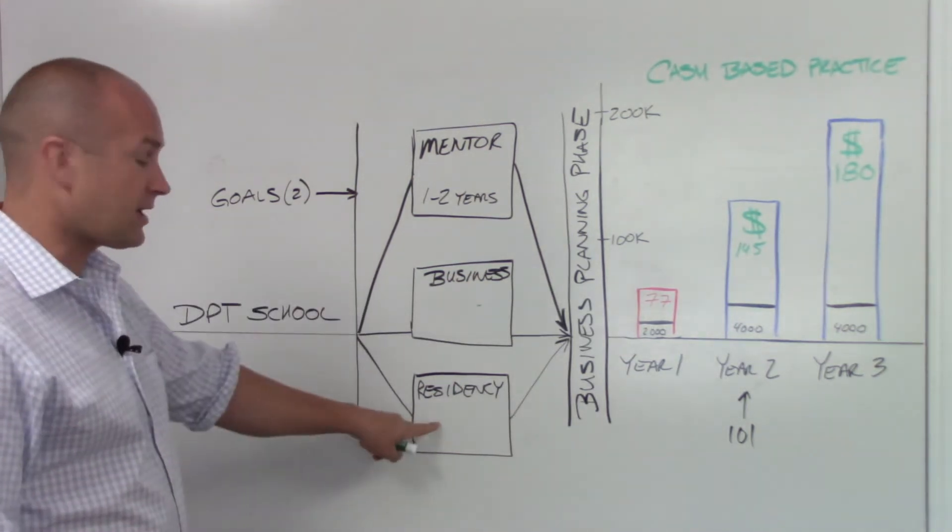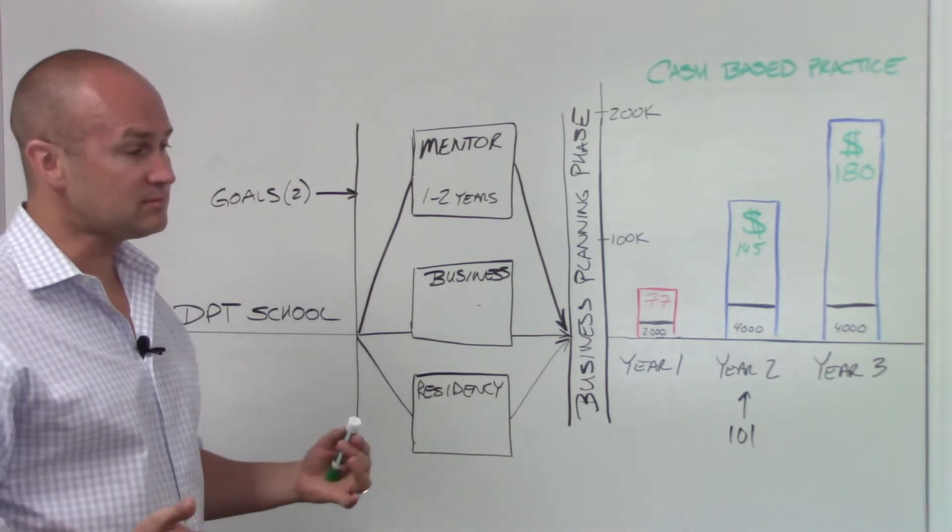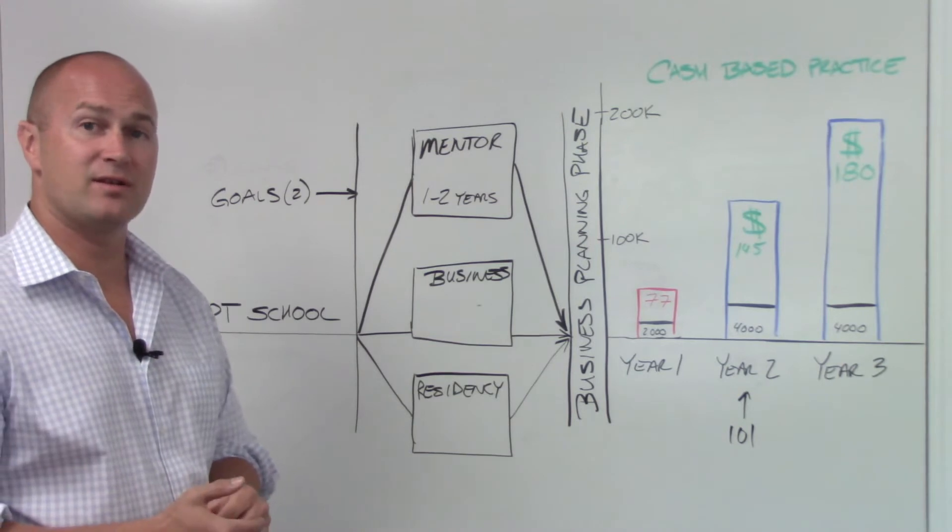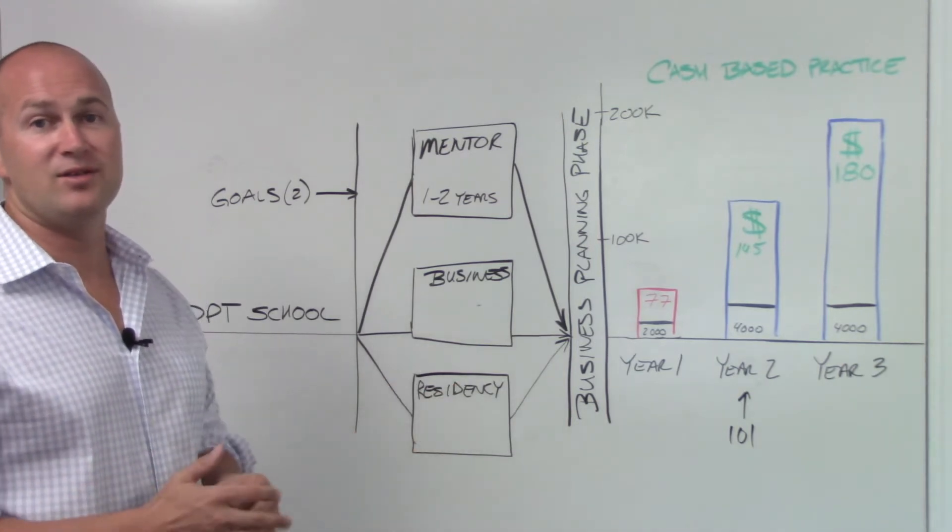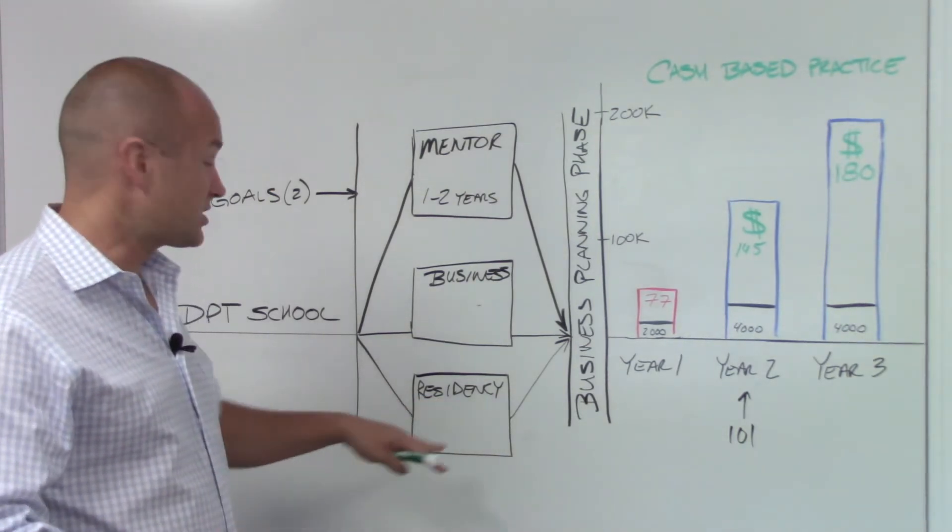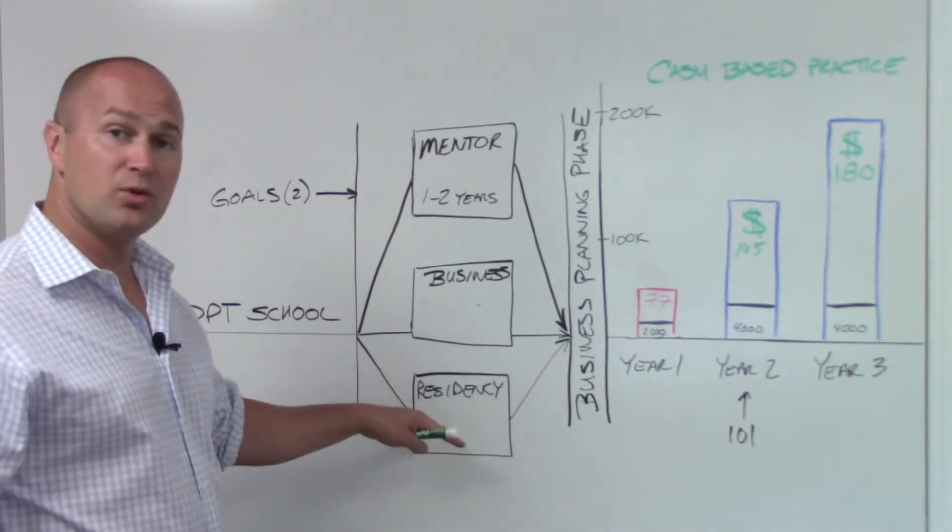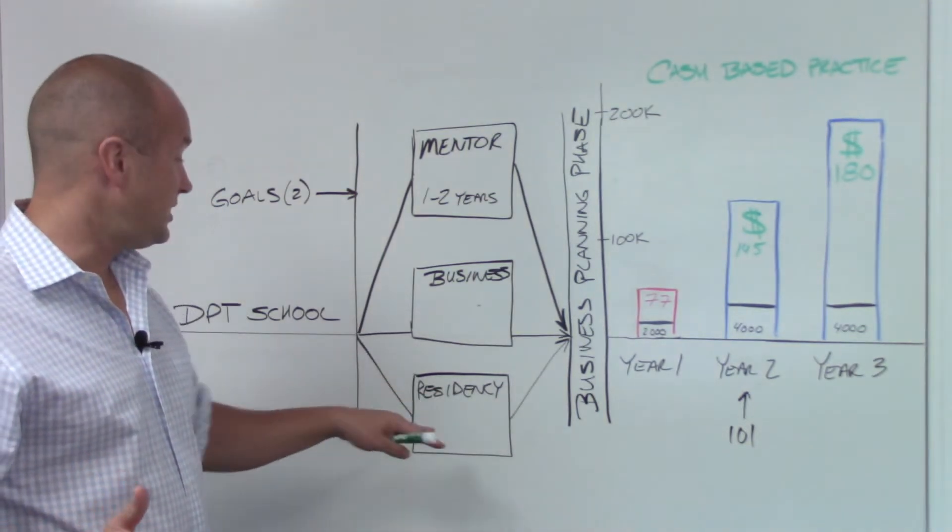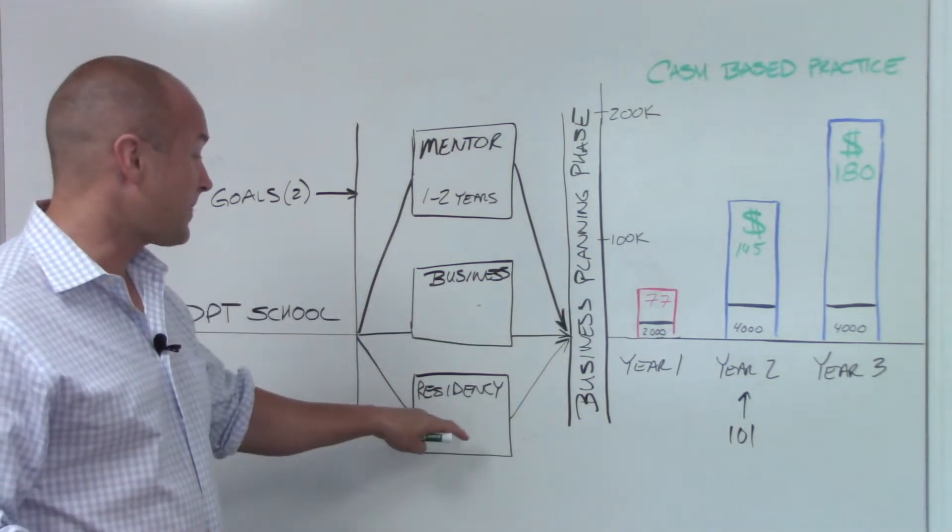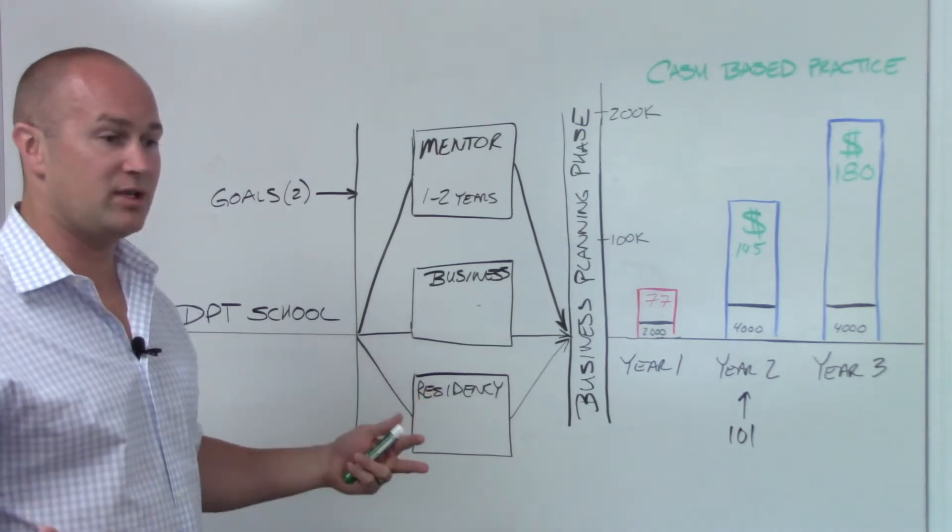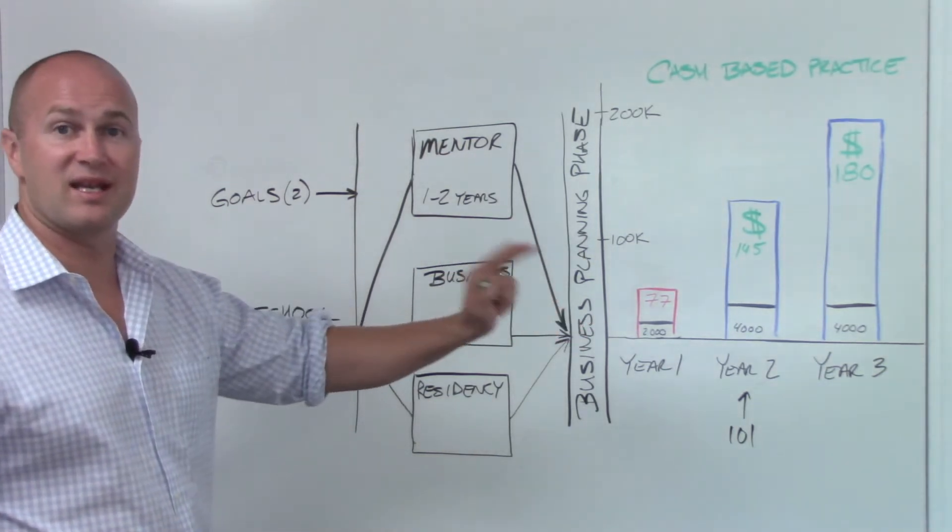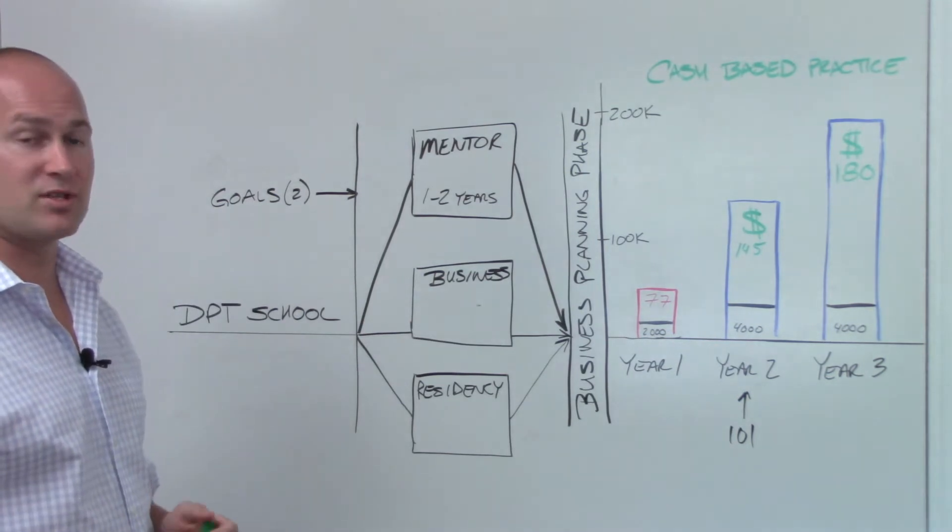Another option is to do a residency. If you're in the right position financially and you have a year to get good quick, I recommend new grads do a residency. Whether it's orthopedics, sports, pediatrics, or neuro, whatever you want to do, you need to get good quick at it. Doing a residency is a great option, sucking it up for a year, getting good quick, and that will give you the skill set to treat a lot of patients and get them better faster with better results.